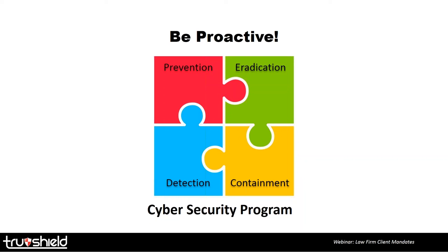Those sound strategies, backed up by tactics and operations, are going to help you address ABA Model Rule 1.6 and also address each and every one of those client mandates. If you've done your job on these four puzzle pieces, you are almost certainly going to be proactively addressing all the client mandates that come in. At that point, it really is simply handing off your security program to your client and saying, we've done our homework — here's our security program, we know we're compliant. That's also going to actively protect your firm from high financial and reputational liabilities. Think of it not just as a paperwork exercise. The goal is to achieve security, and compliance will flow from that.